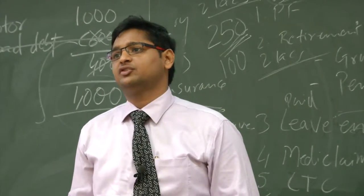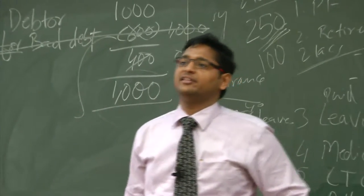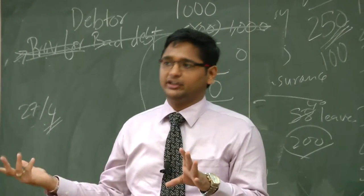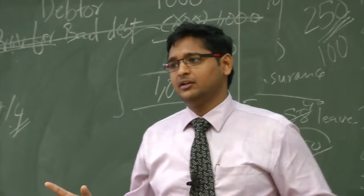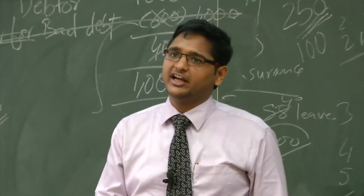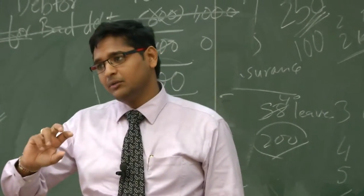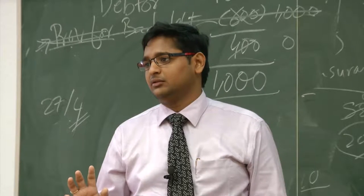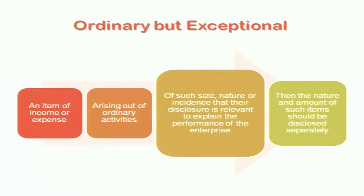What is an exceptional item and what is an extraordinary item? Exceptional items are ordinary items — part of your business — but because of their amount or nature, they become exceptional. It says an item of income or expense arising out of ordinary activities but because of its size, nature or incidence, disclosure is relevant to explain the performance of the enterprise, and the nature and amount of such items should be disclosed separately. Examples of exceptional items include write-down of inventories to NRV as well as reversal of such write-down — where the inventory value has gone down due to obsolescence or damage, and the amount is material, you should disclose it separately.